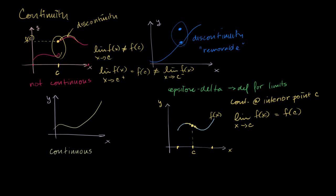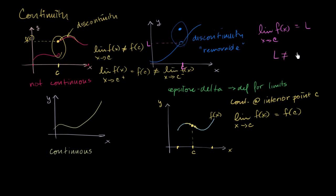What about this one right over here? Let me reset it so it looks like a hole right over there. We see here that the limit — and this is our c — the limit of f of x as x approaches c, let's say that equals L. That's L right over there. And it's pretty clear just looking at this that L does not equal f of c. This right over here is f of c. So once again this would not pass our test — the limit of f of x as x approaches c is not equal to f of c.